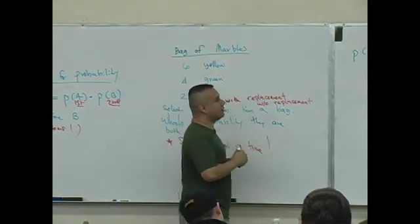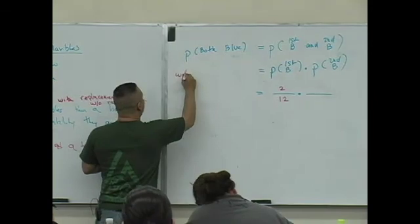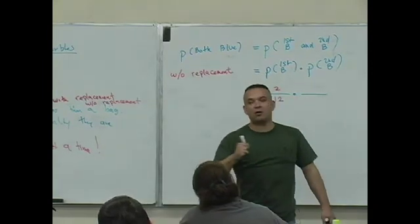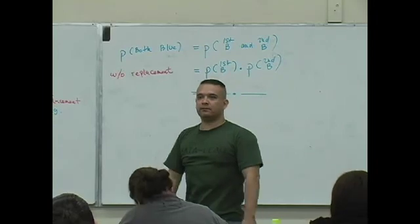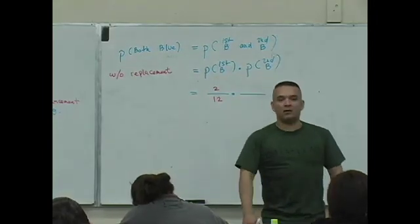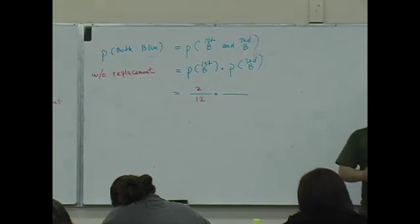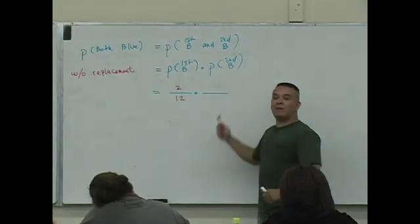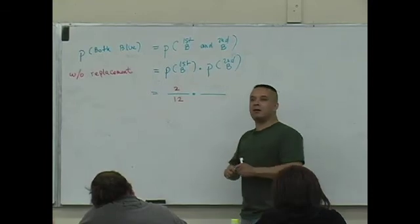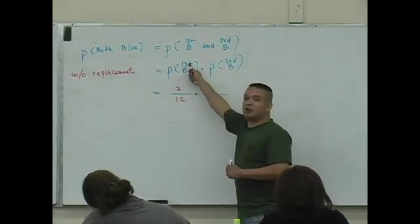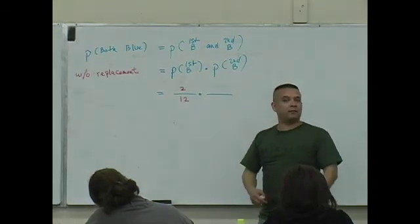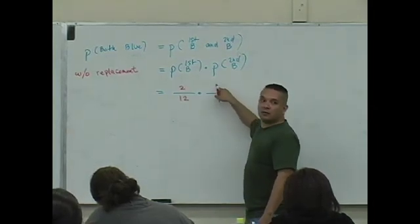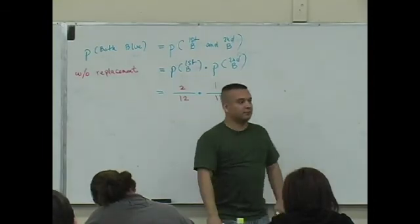So let's do this first example without replacement. You guys know what that means to be without replacement? Throw the marble, the first marble you chose, throw it out the window. You're keeping it out of the bag. Now notice this. When you go and you select that second marble that's blue, what's the probability now that that second marble is blue, given that the first that you chose was thrown out the window? Well, how many marbles are left? Eleven are left in the bag. How many are blue? One.